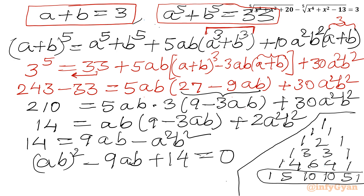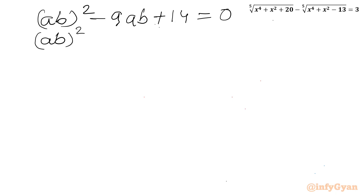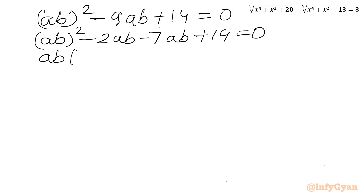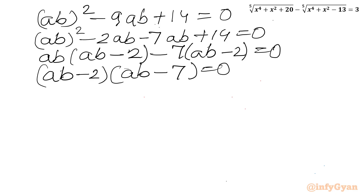We can use the method of factorization. (ab)² − 9ab + 14 = 0. I can write (ab)² − 2ab − 7ab + 14 = 0. Taking ab common: ab(ab − 2) − 7(ab − 2) = 0. So we get ab = 2 or ab = 7.